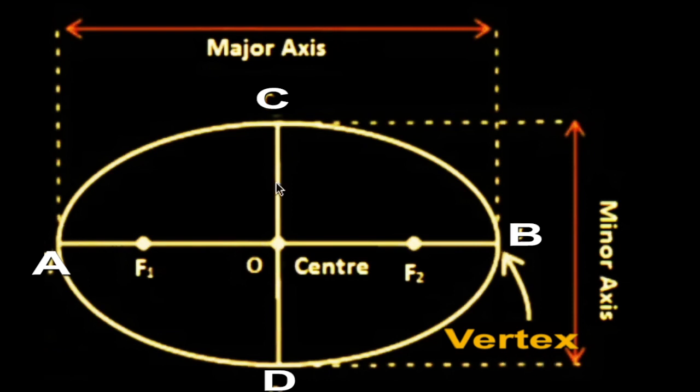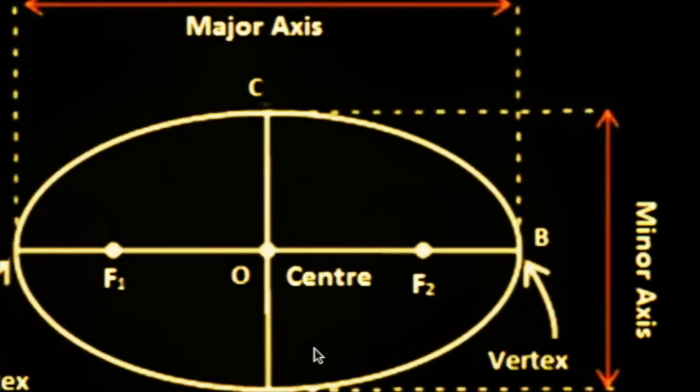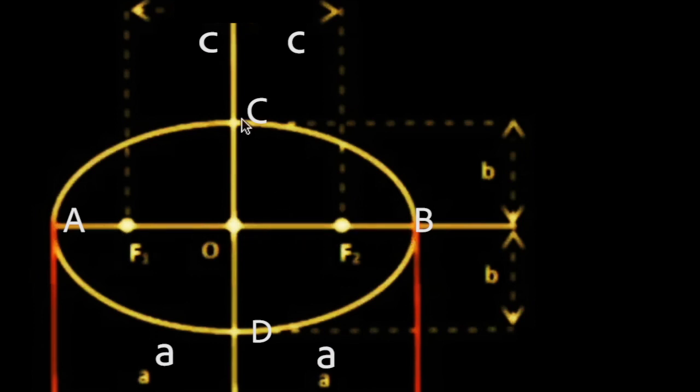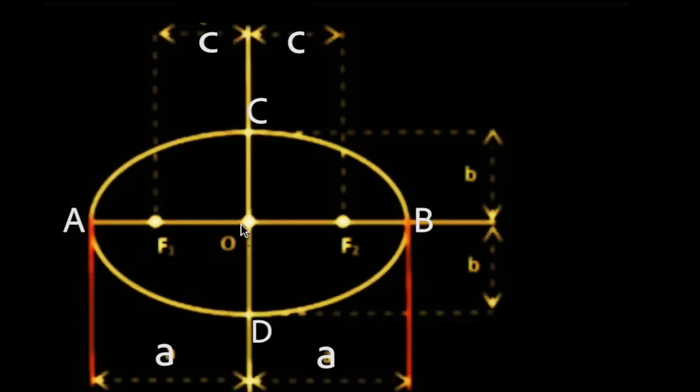...and b are vertices of the ellipse. AB is the major axis and CD is the minor axis. O is the center and F1, F2 are two foci of the ellipse. F1 and F2 are two foci - O to F1 or O to F2 is c, and O to the vertex of the ellipse is a.